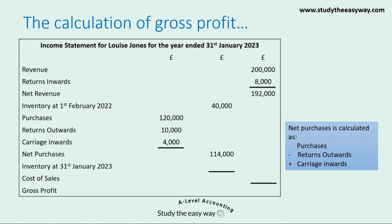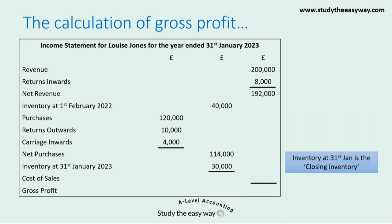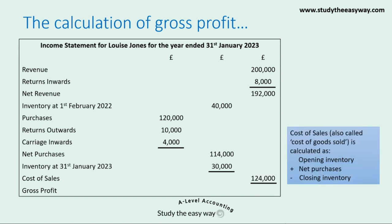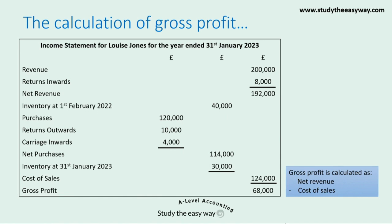Use your calculator to check that you can do this calculation correctly. Next we show the closing inventory — the inventory at the end of the financial year. You'll notice that the date of this inventory figure matches the date of the income statement. We now have three figures in the middle column: opening inventory, net purchases, and closing inventory. We use these three figures to calculate cost of sales — also called cost of goods sold — calculated as opening inventory plus net purchases minus closing inventory. Next we can calculate gross profit, which is net revenue minus the cost of sales.